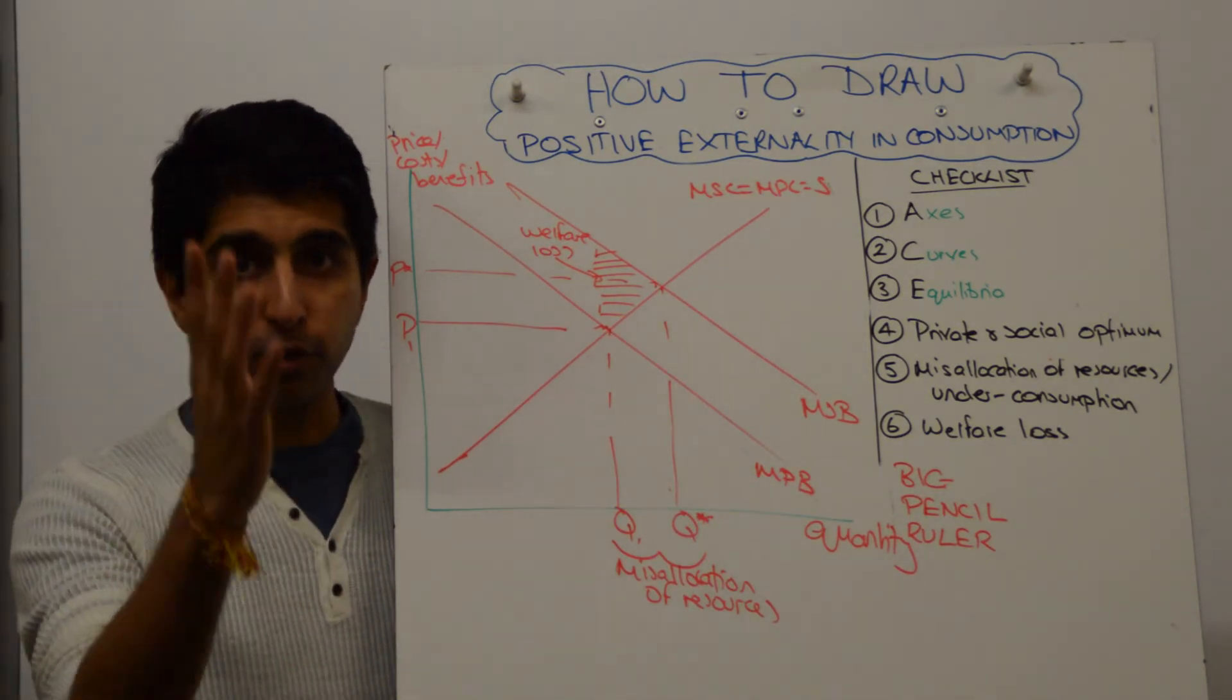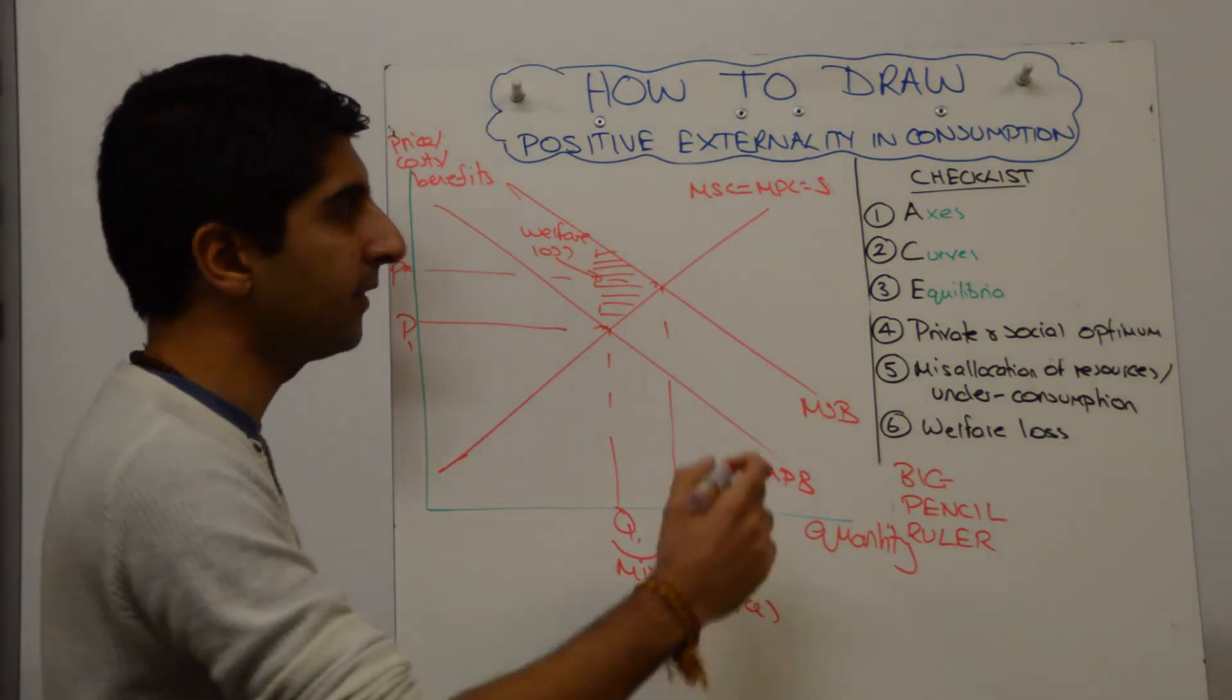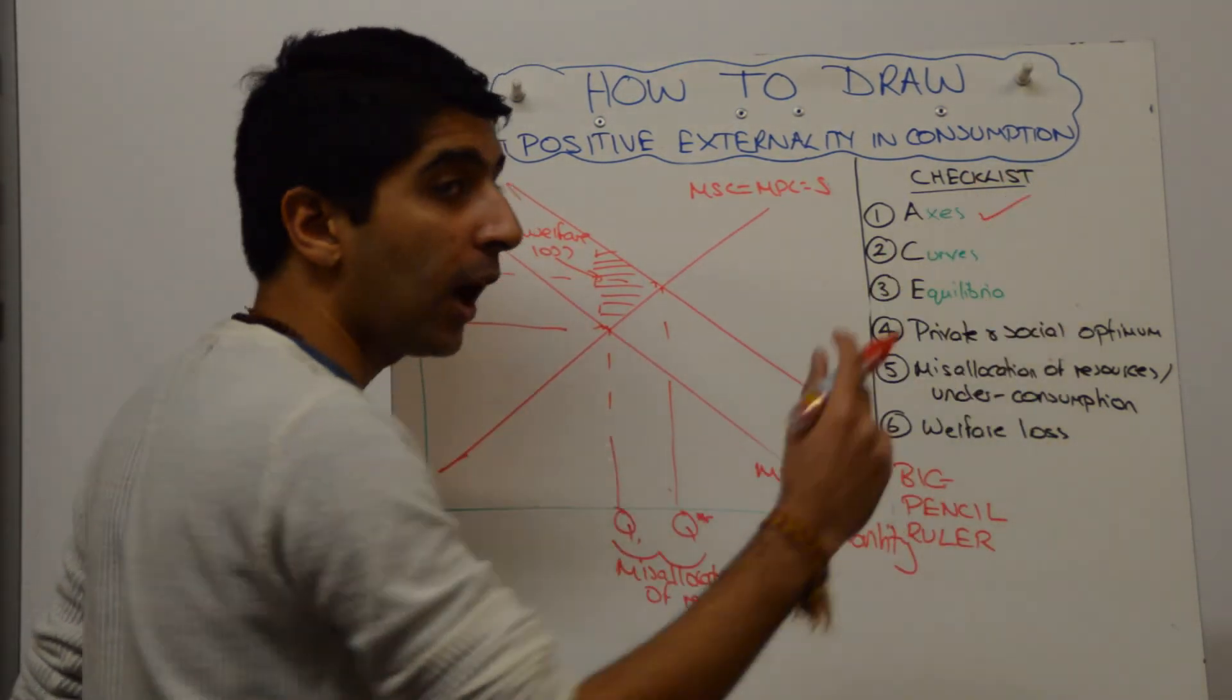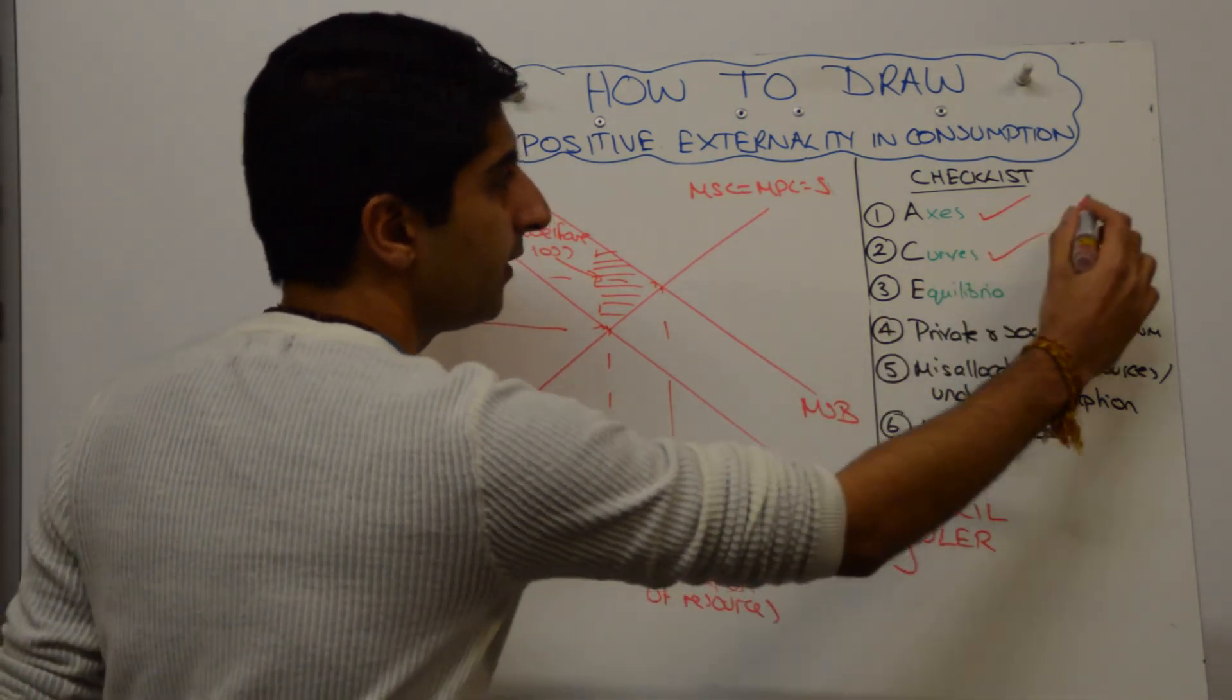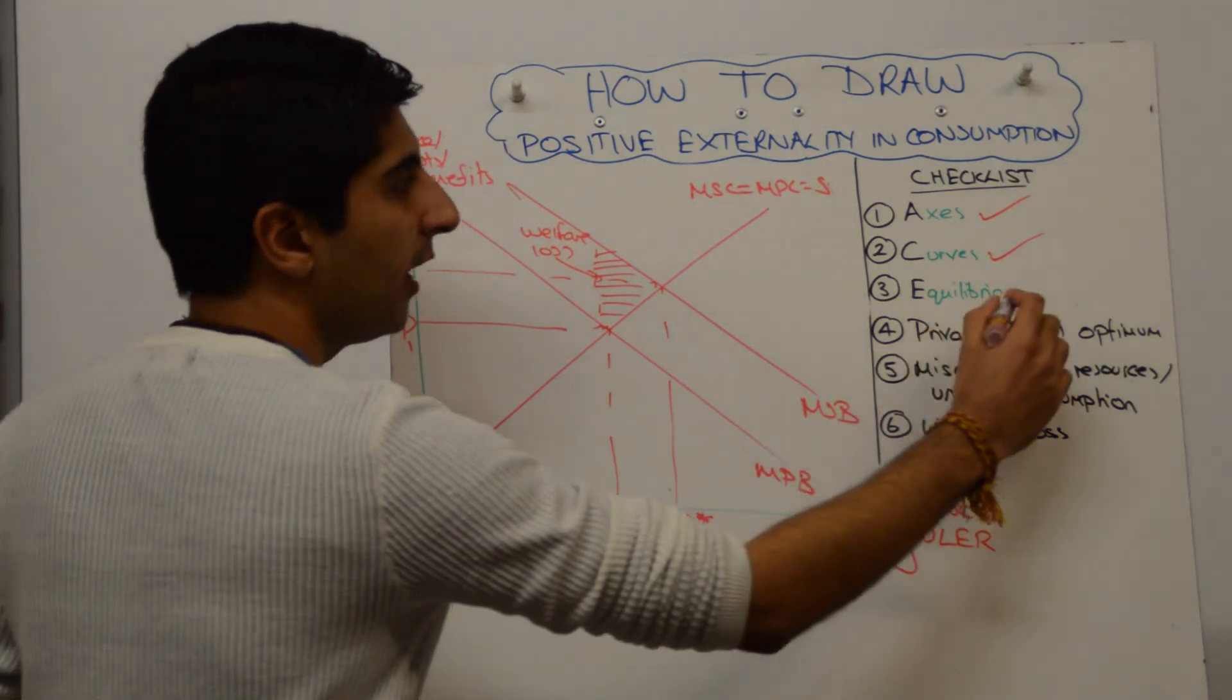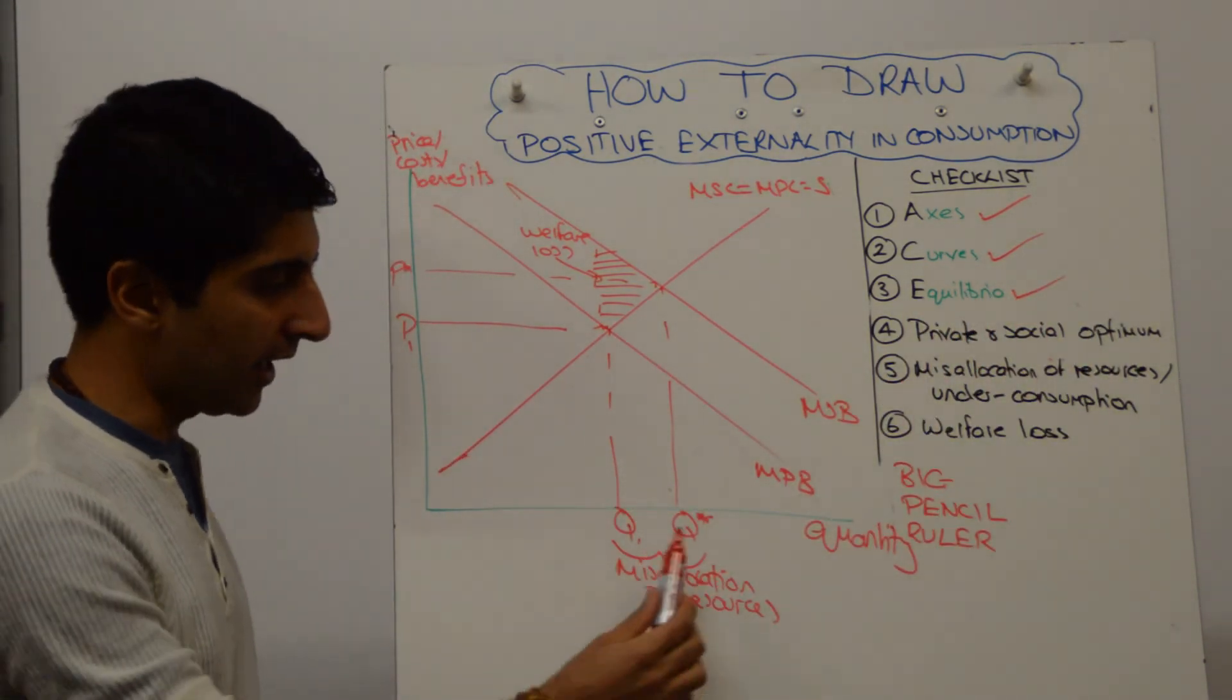Then, as always, we go through our mental checklist. First of all, have I done my basics right as an economist? Have I labelled my axis? Yeah, absolutely. Start with that. I always do. Have I labelled my curves? Yes. Never forget these things. Have I labelled my equilibrium? Both have been labelled. My private and social optimum? Are they clearly different? Yes, they are. Very clearly different on the diagram.